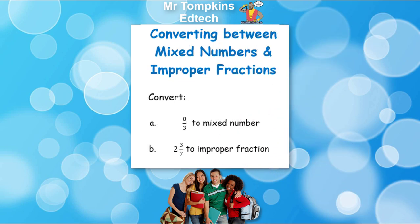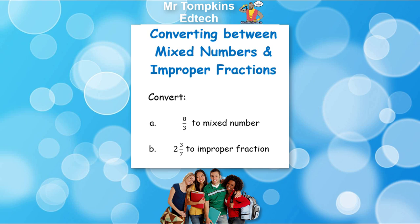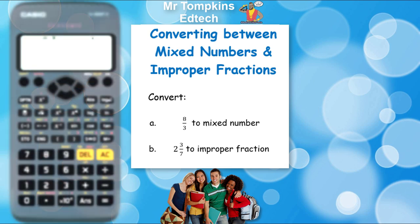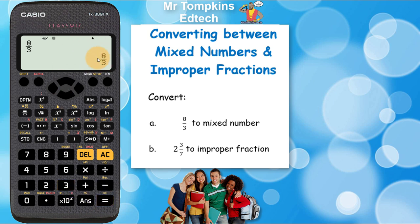Convert 8 thirds into a mixed number. So 8 thirds is what we call a top-heavy fraction and I can type that in easily enough on the old calculator. I'm going to press the 8 for the numerator, then the fraction key, and then the 3 for the denominator. Then I'm going to press equals so it appears on the bottom right display, and then to convert it into a mixed number I'm going to press the shift key and then the symbolic to decimal key.